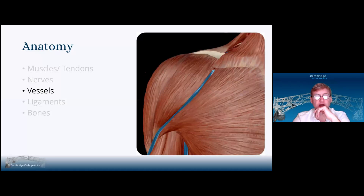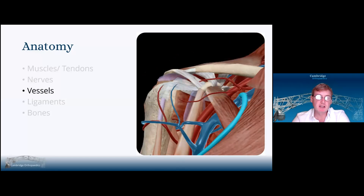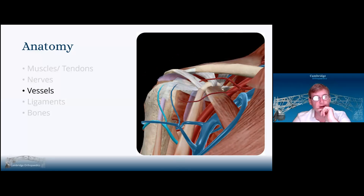As for the vessels, the cephalic vein defines the delta-pectoral groove, but there are other vessels that are important in this area. We have the acromial branch of the thoracoacromial artery, which goes into the CA ligament. We've got the deltoid branch or the humeral branch, which crosses across your path. You've got the anterior circumflex humeral artery and vein and the posterior circumflex humeral artery and vein.